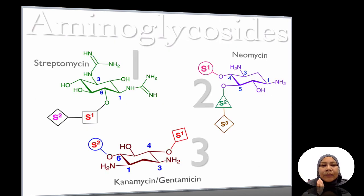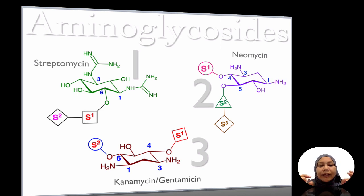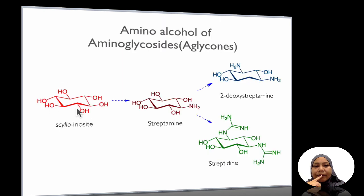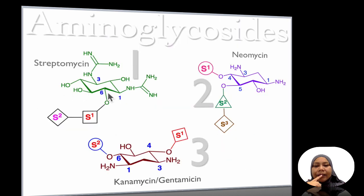In aminoglycosides, there are three families. The first one is based on streptomycin, which uses the streptidine template, with two sugars linked to the streptidine aglycone.